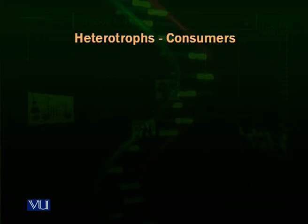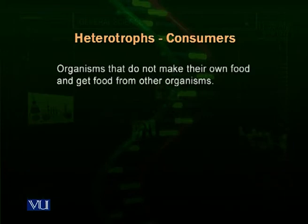Heterotrophs are the organisms which are also called the consumers. Heterotrophs means they are not able to make their own food and they have to acquire food from the environment, usually through the autotrophs. Heterotrophs — animals particularly — are organisms that do not make their food; they get their food from other organisms.